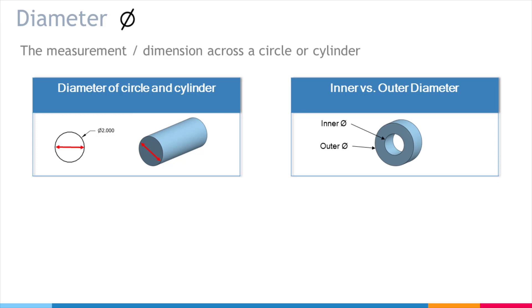And then likewise, so we had the circle that's two-dimensional, but then we also have a cylinder that's three-dimensional, and the distance across the cylinder is also its diameter. And then we mentioned inner and outer diameters, so basically if you have an outer diameter that's the distance of the outside of the circle, and if we have an inner diameter that's the inner distance across the inner diameter of the circle.